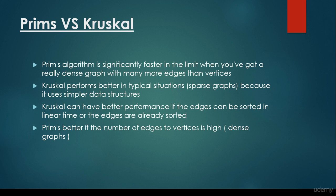In the end, I would like to summarize the difference between Prim-Jarnik and Kruskal algorithm, and basically when to use these algorithms. Prim's algorithm is significantly faster in the limit when we have a really dense graph with many more edges than vertices. Kruskal performs better in typical situations with sparse graphs when the number of edges are not that high, because it uses simpler data structures — we just have to sort the edges according to edge weights, without needing any heap. Kruskal can also have better performance if the edges can be sorted in linear time or are already sorted.